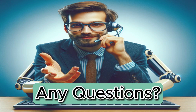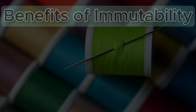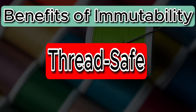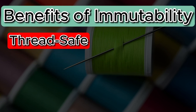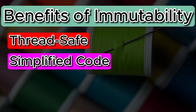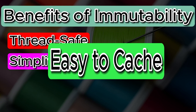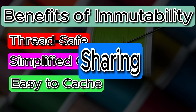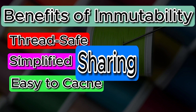I hope everything is clear up to this point. In case you have any doubt, please let me know in the comment section below. Now let's talk about the potential benefits and drawbacks of using immutable objects. The first benefit is thread safety — immutable objects are inherently thread safe since their state cannot be modified after creation, so multiple threads can safely read the object without risk of data inconsistency. Then there is simplified code — with immutability you avoid complex logic related to mutable state changes, resulting in simpler and more predictable code. Immutable objects are also suitable for caching since their state will not change, making them a perfect caching option.